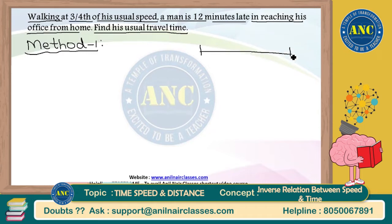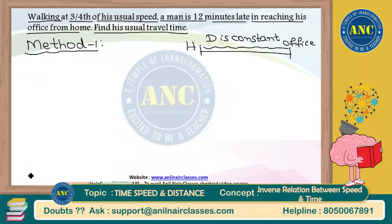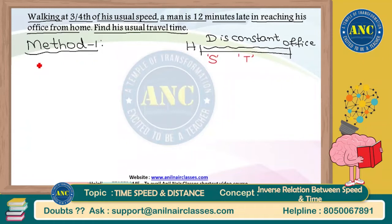Suppose this is my home and the other side is my office. Every day I travel along the same path, so distance is constant. Usually I travel at speed S kilometers per hour, take T minutes, and cover distance D kilometers. That is the everyday scenario: distance equals speed into time, so D equals S into T.